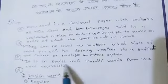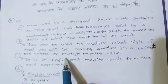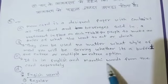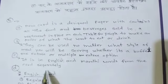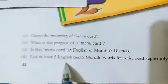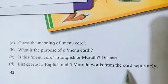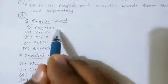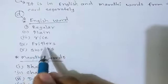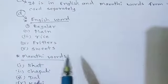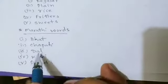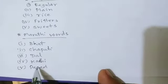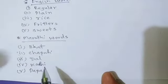Answer c: it is in both English and Marathi. Question d: list five English and five Marathi words from the card separately. English words: regular, plain, rice, fritters, sweets. Marathi words: bhaat, chapati, dal, kadhi, and papad.